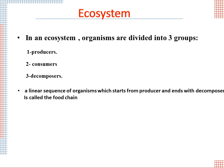A linear sequence of organisms which starts from the producer and ends with the decomposer is called the food chain. It shows the flow of energy from one living thing to another, and shows what is eaten by what.